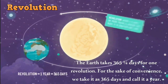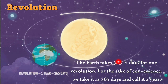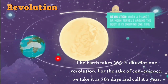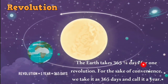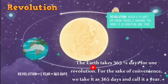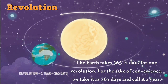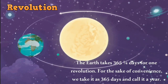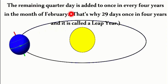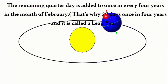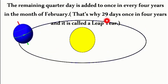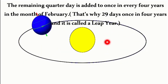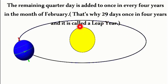Revolution means revolving around the sun. The Earth takes 365 and one-quarter days for one revolution. For convenience, we take it as 365 days and call it a year. The remaining quarter day is added once every four years in February, giving February 29 days — that is called a leap year.